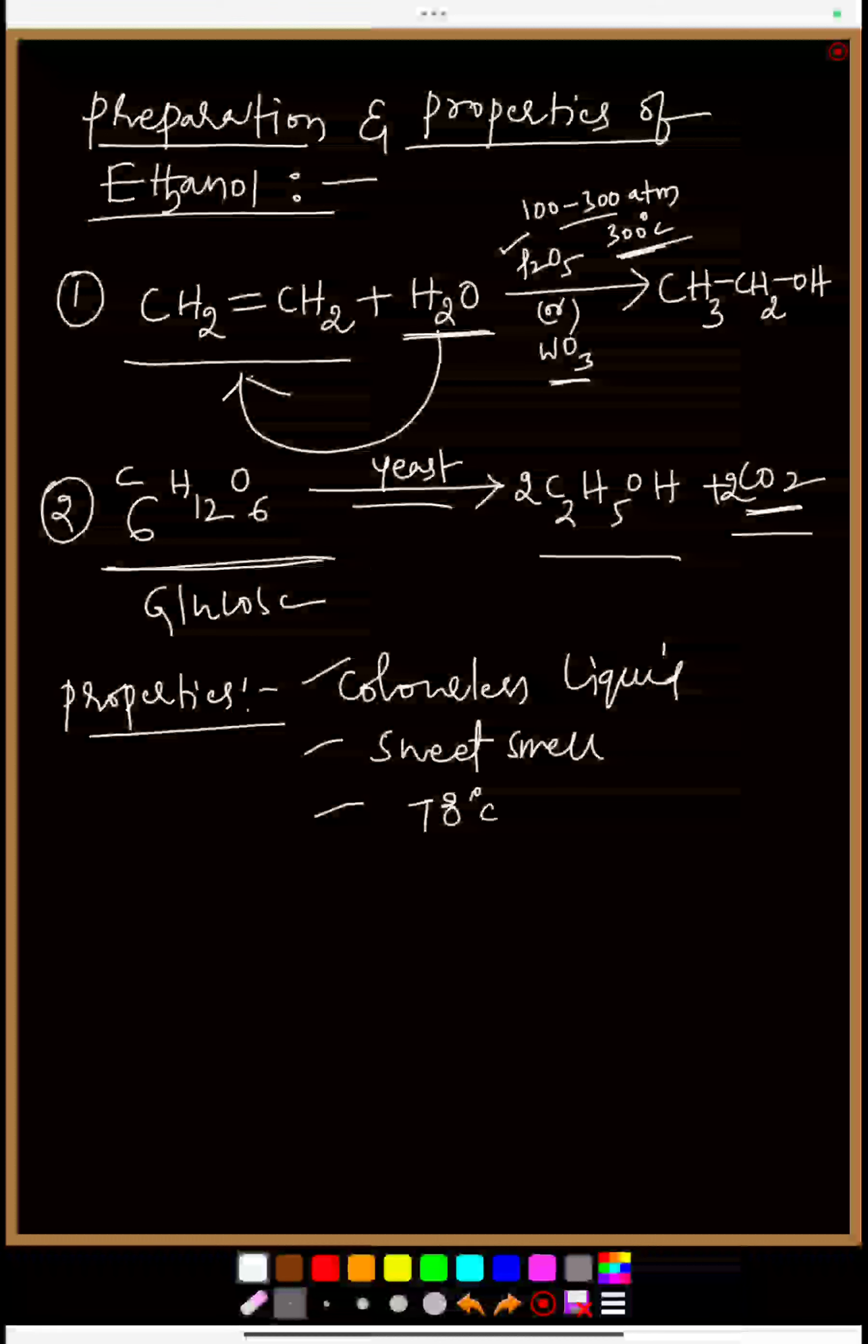When it comes to chemical properties, very very important: chemical properties - alcohol is having acidic character, so it is going to react with sodium metal.